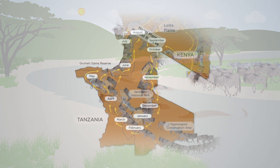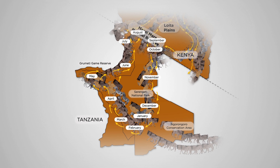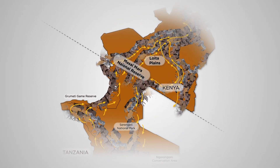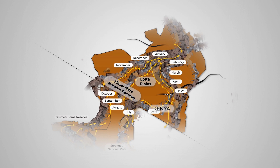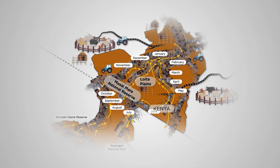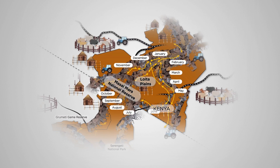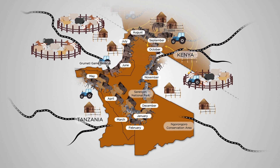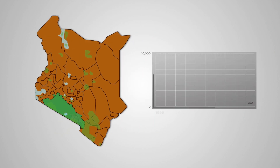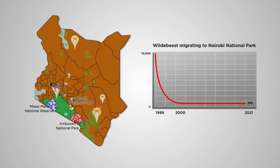Aside from the proliferation of fences, increasing settlements, agriculture, humans and livestock, and construction of roads have also contributed to the collapse of the Mara Loita wildebeest migration. The Mara Loita is the last ungulate mass migration in Kenya to collapse. A similar and more catastrophic collapse of wildlife migration occurred from 1999 to 2000 in the Athi Kaputiei ecosystem, which includes the Nairobi National Park, also found in Kenya.